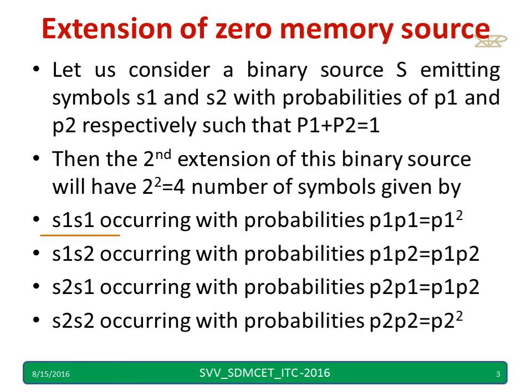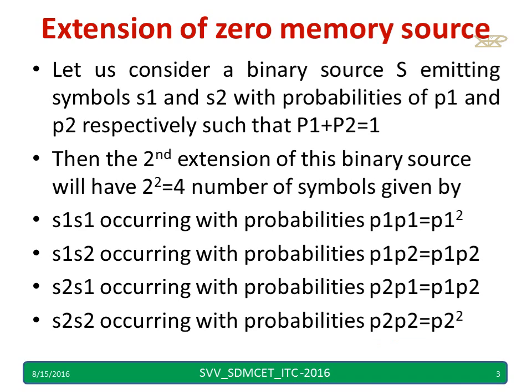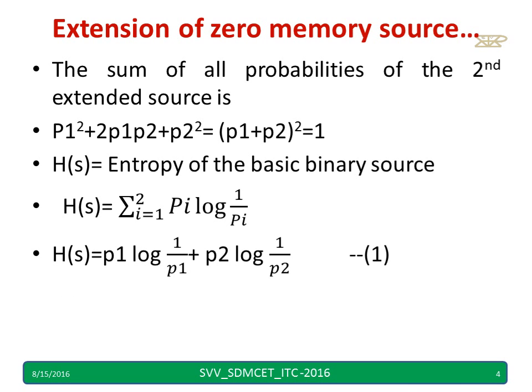For the second extension, the symbols and their probabilities are: S1S1 with probability p1·p1 = p1², S1S2 with probability p1·p2, S2S1 with probability p2·p1, and S2S2 with probability p2². You can pause and read these probabilities before continuing.